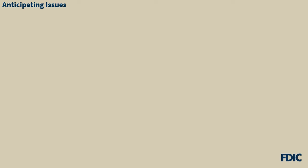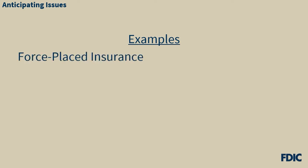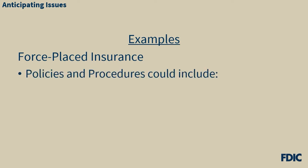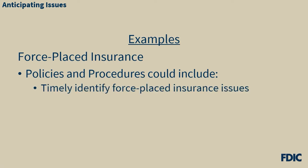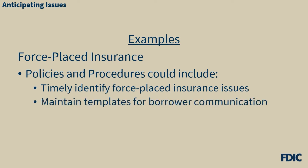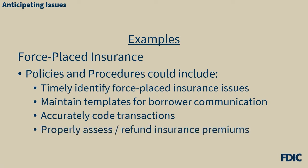We want to make special mention of some areas to consider when assessing your CMS program. Specifically, anticipating possibly non-routine issues, such as forced place insurance and accommodation loans, and incorporating them into your program can help strengthen your CMS. Circumstances may arise requiring the forced placement of hazard insurance. While community banks may not frequently face the need to force place hazard insurance, having policies and procedures in place can help make these situations easier should they arise. Procedures may be designed to identify forced place insurance issues in a timely manner, maintain templates for communications with borrowers, accurately code transactions, and properly assess and, if applicable, refund insurance premiums.